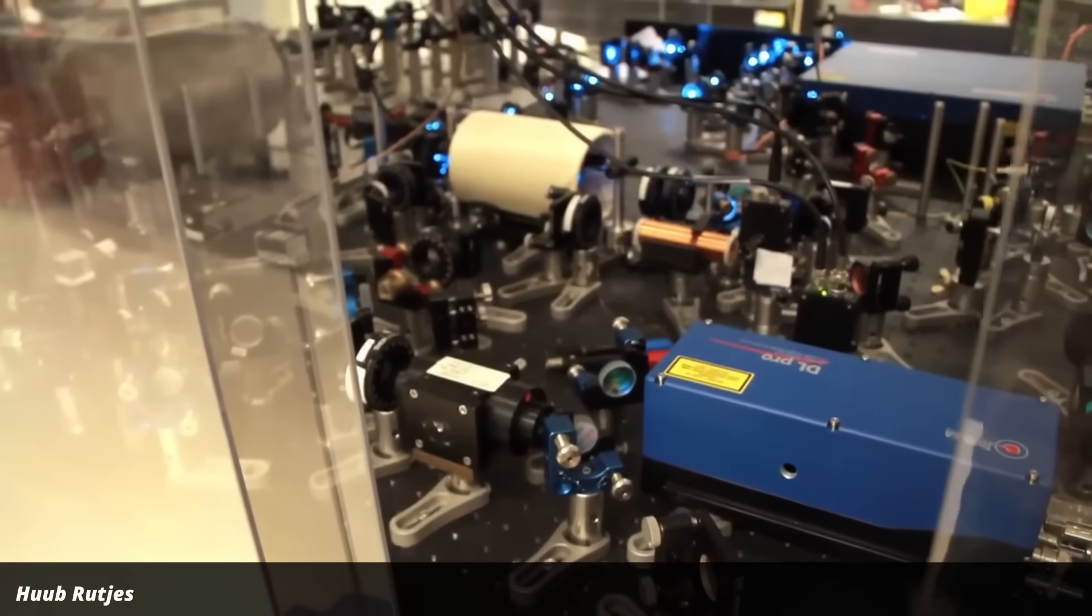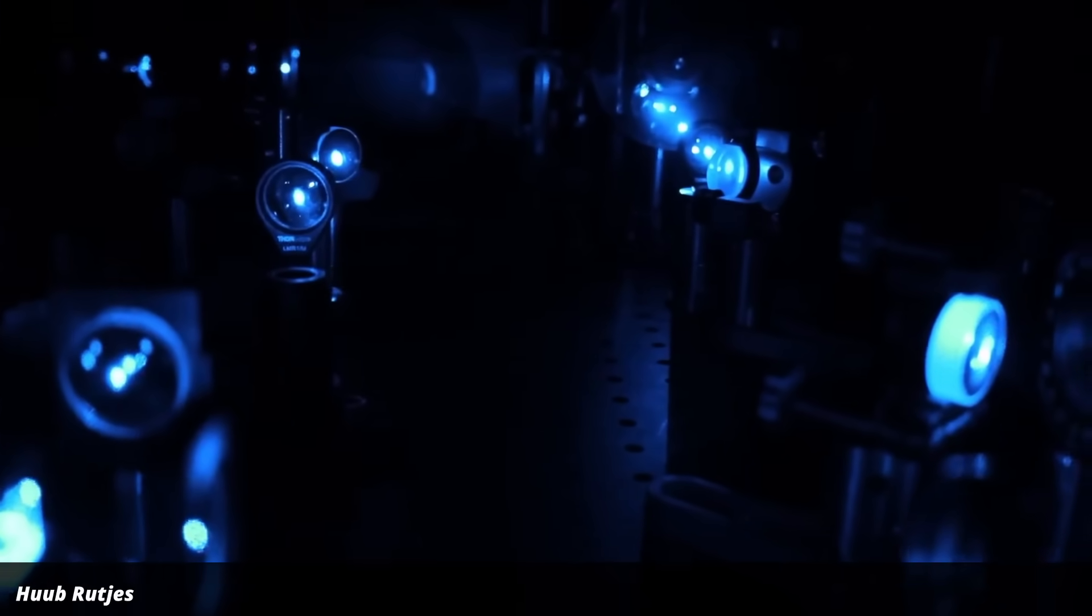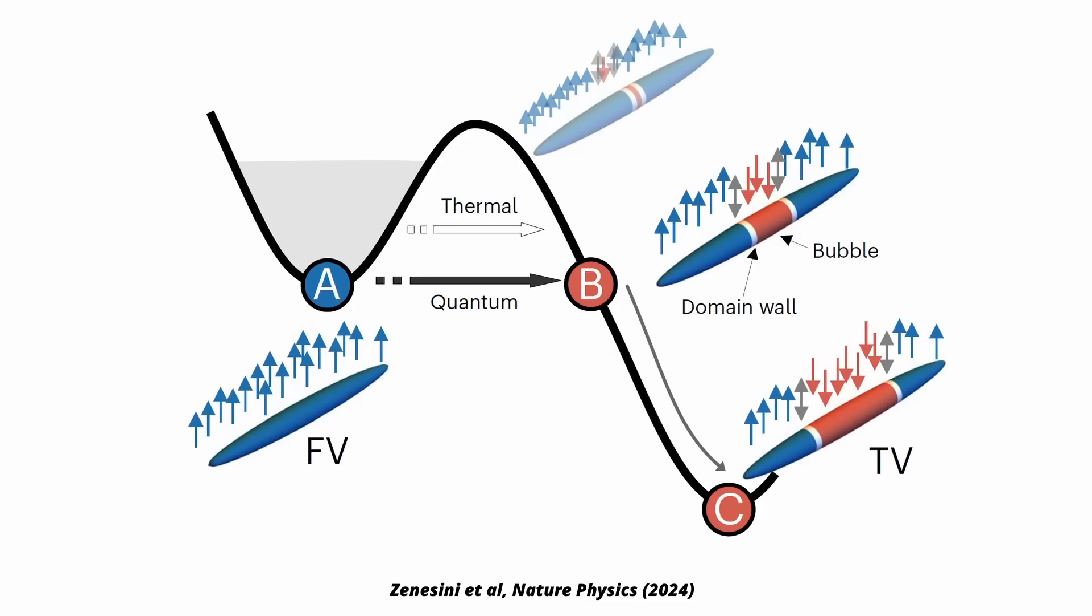They didn't look at vacuum decay, but a phase transition triggered by quantum fluctuations and the bubble nucleation. For this, they used a cloud of sodium atoms cooled to near absolute zero and put it into a magnetic field. The sodium atoms have spins and they want to align themselves along the magnetic field. They also want to align themselves towards each other, though.